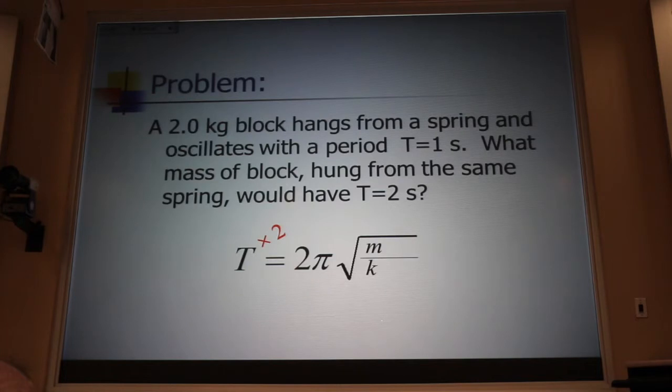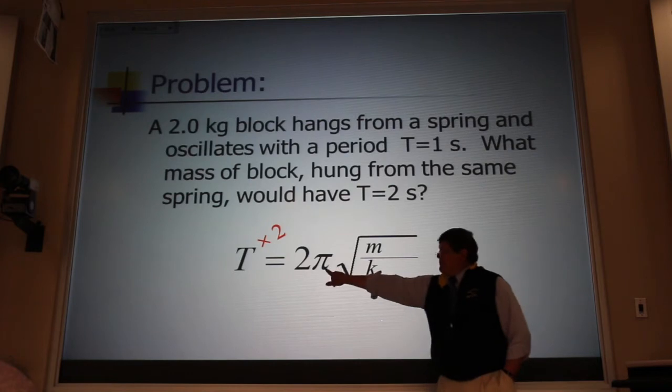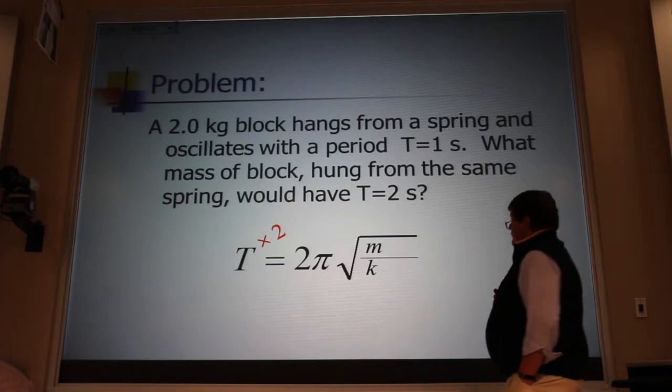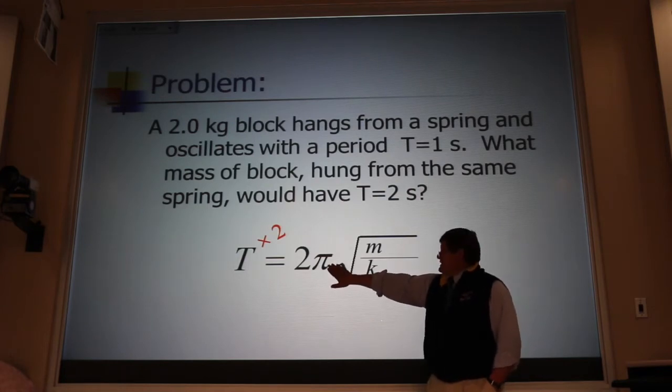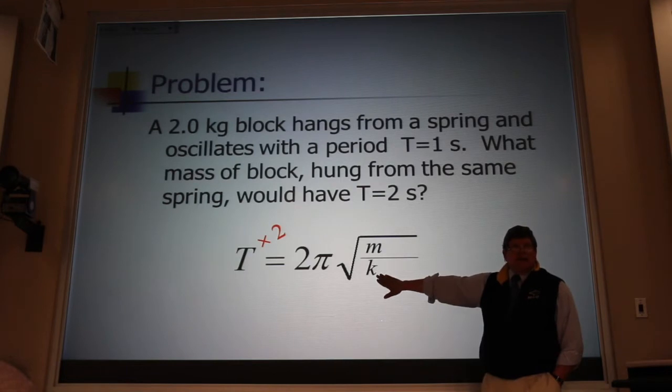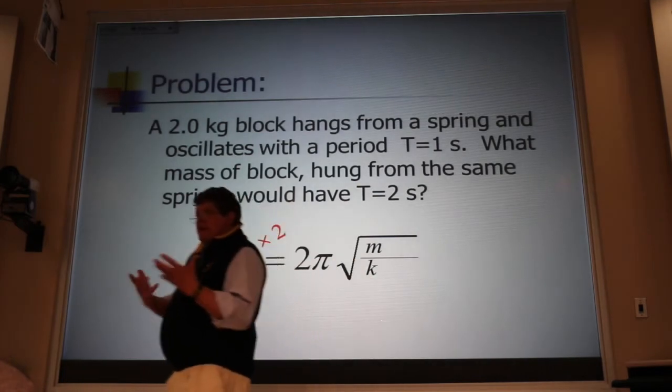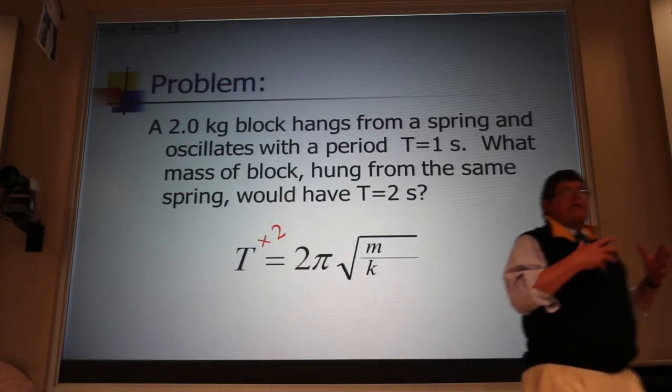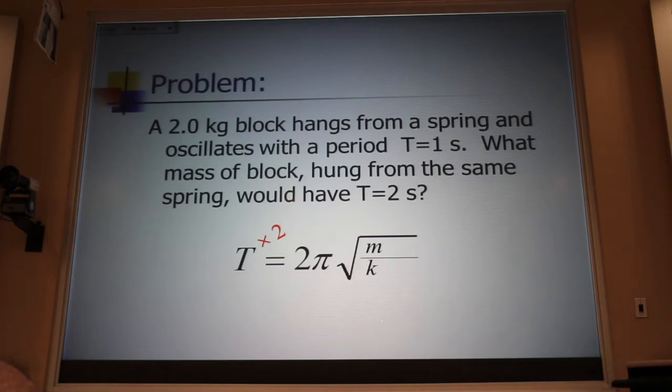In order to double that period, I've got to double what's on the right-hand side. But I can't mess with that. That's just pi. K, can I change K? No, it's the same spring. Once that spring is made at the factory, it has a certain K value. So all we can do is change this mass. If we double that mass, is that going to double the right-hand side? No, because it's under the square root. So we have to multiply that mass by a factor of 4. The square root of 4 is 2. Instead of a 2-kilogram block, we would have to use an 8-kilogram block.